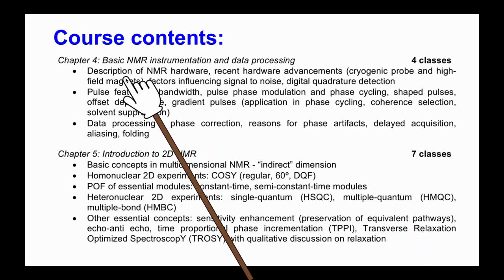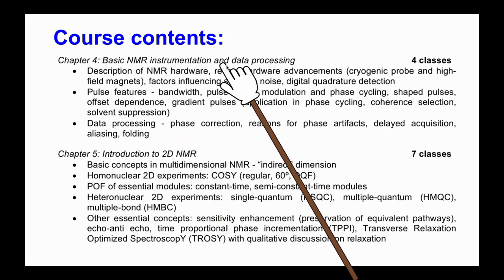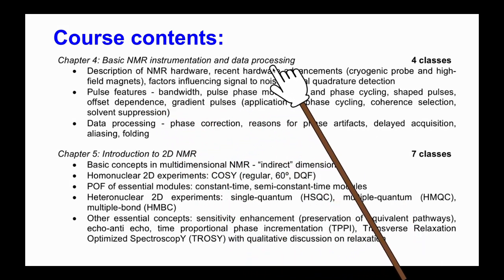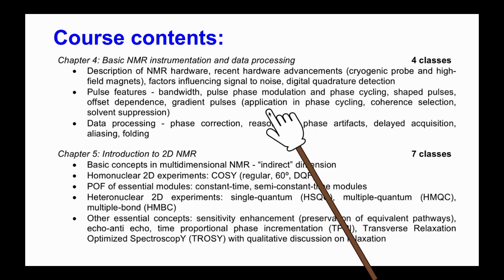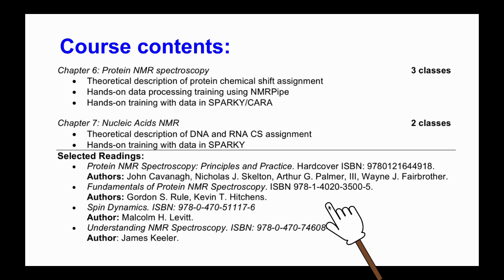Following this, we will be applying the density matrix formulation in order to understand very basics of NMR spectroscopy. Having done this, we will be focusing a few classes on basic NMR instrumentation and data processing. That will be a hands-on component that will be involved in terms of data processing as we go forward. And after having understood the basics of one-dimensional NMR spectroscopy and instrumentation, we will be looking at introduction to multi-dimensional NMR, in particular 2D NMR spectroscopy, where different experiments such as the COSY and the HMBC and HSQC will be introduced. And finally, after having developed all of this, we will be trying to look at how this is used to analyze biomolecules like a protein and a nucleic acid.